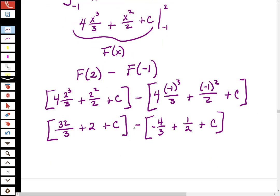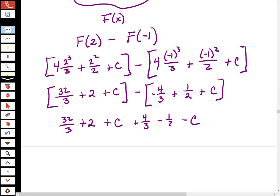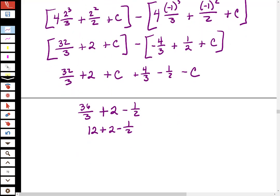I think then these will add, so I'll get a plus 4 thirds and a minus 1 half and a minus c, plus c here, plus 2, 32 thirds. So eventually I'll get this, ooh, 36 thirds, right? Which is nice because that's a whole number. Plus 2 minus 1 half, so this should be 12. Plus 2 minus 1 half, so that's 14 minus 1 half is 13 and a half, or 13.5.